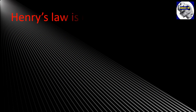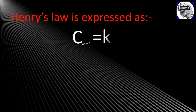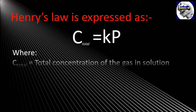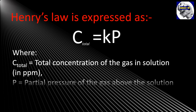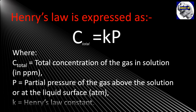Henry's Law is expressed as: C = K × P. Where C is the total concentration of the gas in solution (in PPM), P is the partial pressure of the gas above the solution or at the liquid surface (in atmospheres), and K is Henry's Law constant.